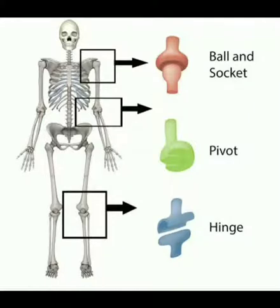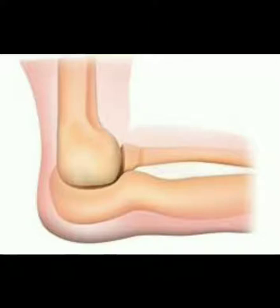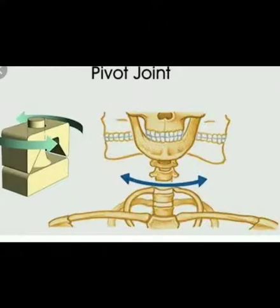The first movable joint is the hinge joint. The hinge joint allows the movement of bones only in one direction — it means we can move such parts only in one direction. Hinge joints are located in different parts of our body such as fingers, elbows, knees, and toes.